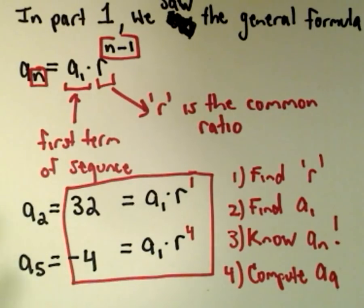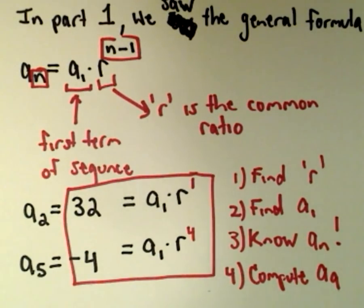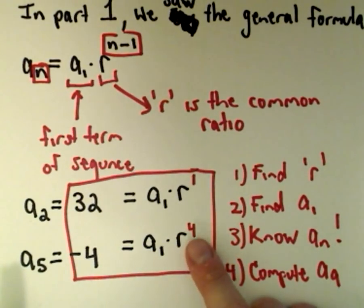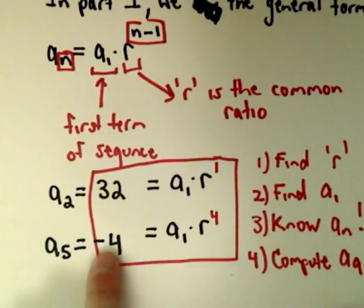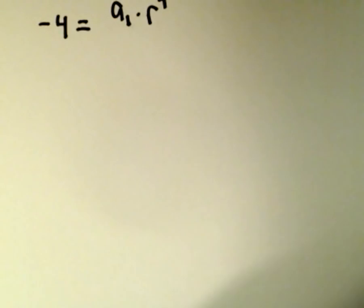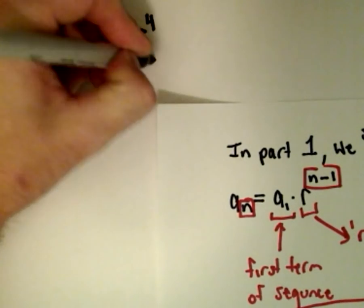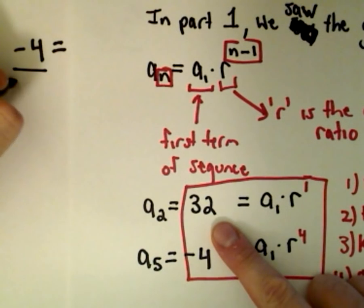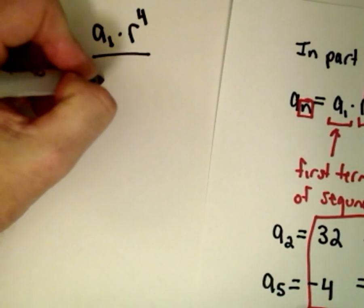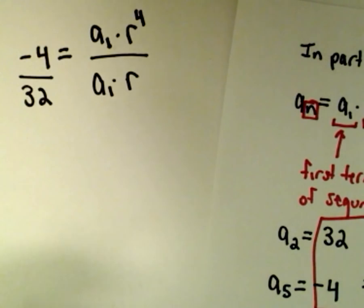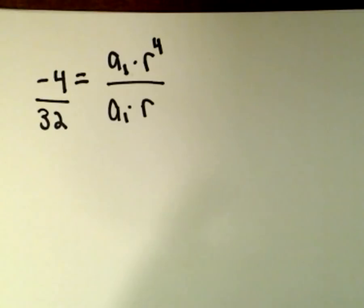I'm going to set up a fraction — a ratio. I usually like to take the term with the larger exponent and make that the numerator. So I'll divide: negative 4, which equals a sub 1 times r to the fourth, over 32, which equals a sub 1 times r to the first. Notice what we can start simplifying.